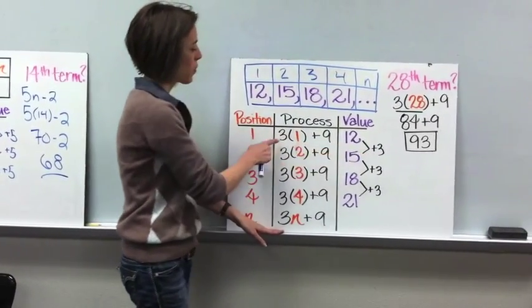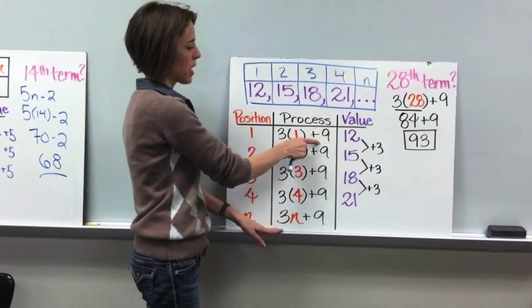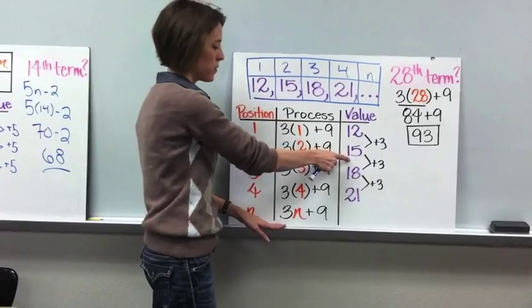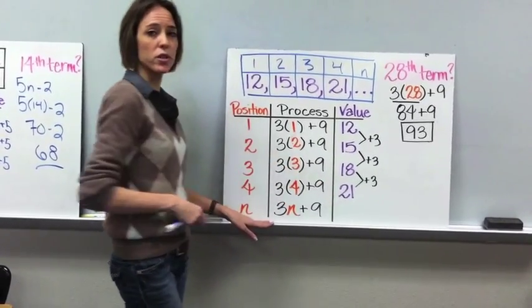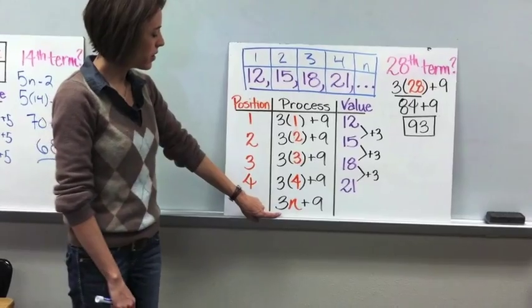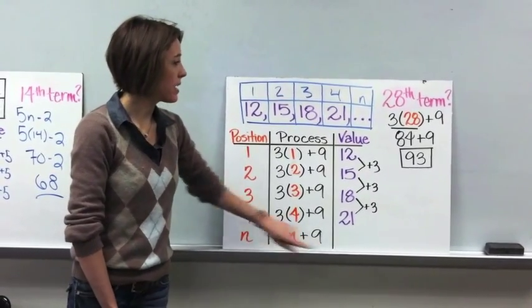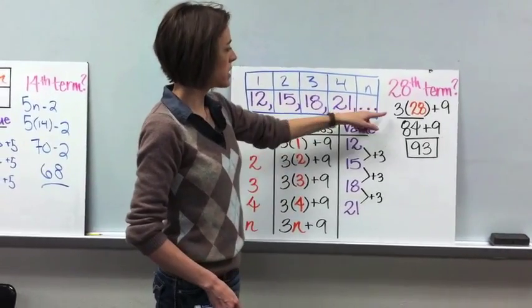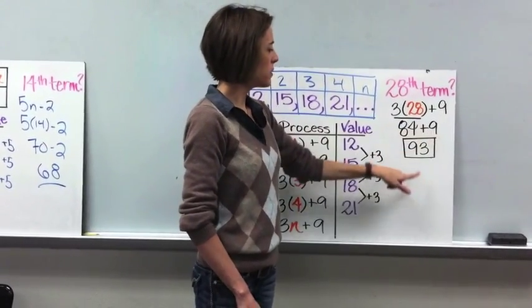We take our common difference and multiply it by the position or term number. So 3 times 1 is 3, and we need to get to 12, so we add 9. Then 3 times 2 is 6, and 6 plus 9 is 15. 3 times 3 is 9, plus 9 is 18. 3 times 4 is 12, plus 9 is 21. The only thing we're changing is the position number. So our expression is 3n plus 9. It asks you to find the 28th term, so you plug in 28 for n: 3 times 28 is 84, and 84 plus 9 gives you 93.